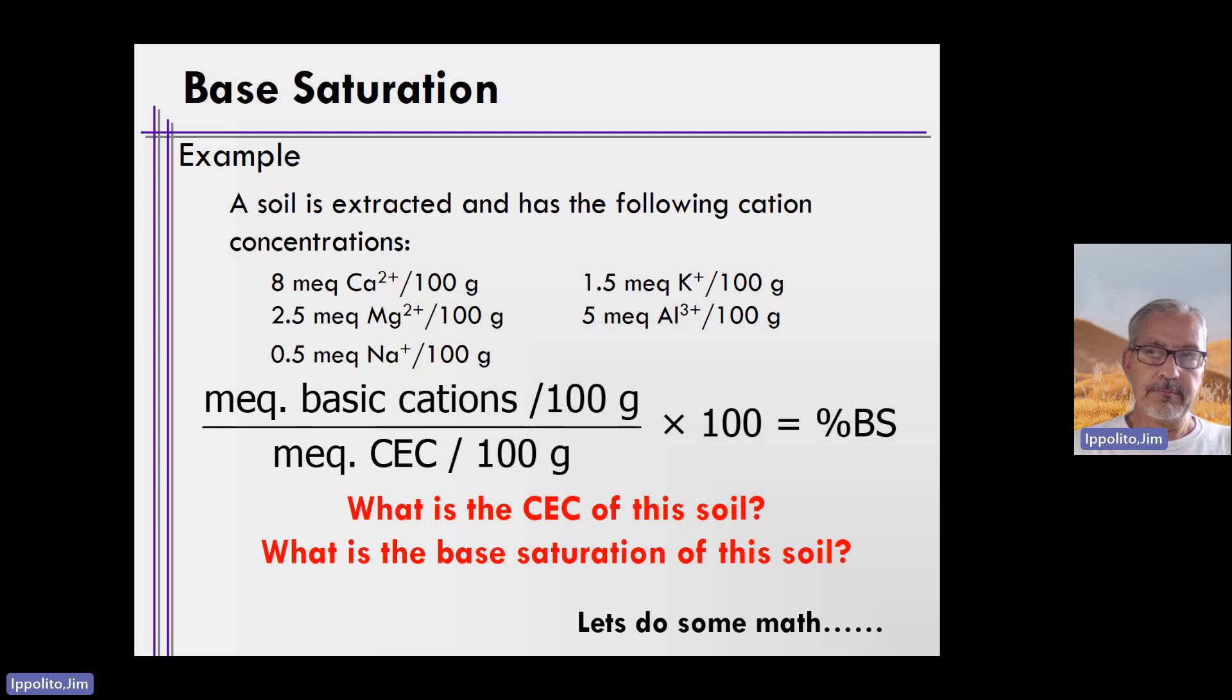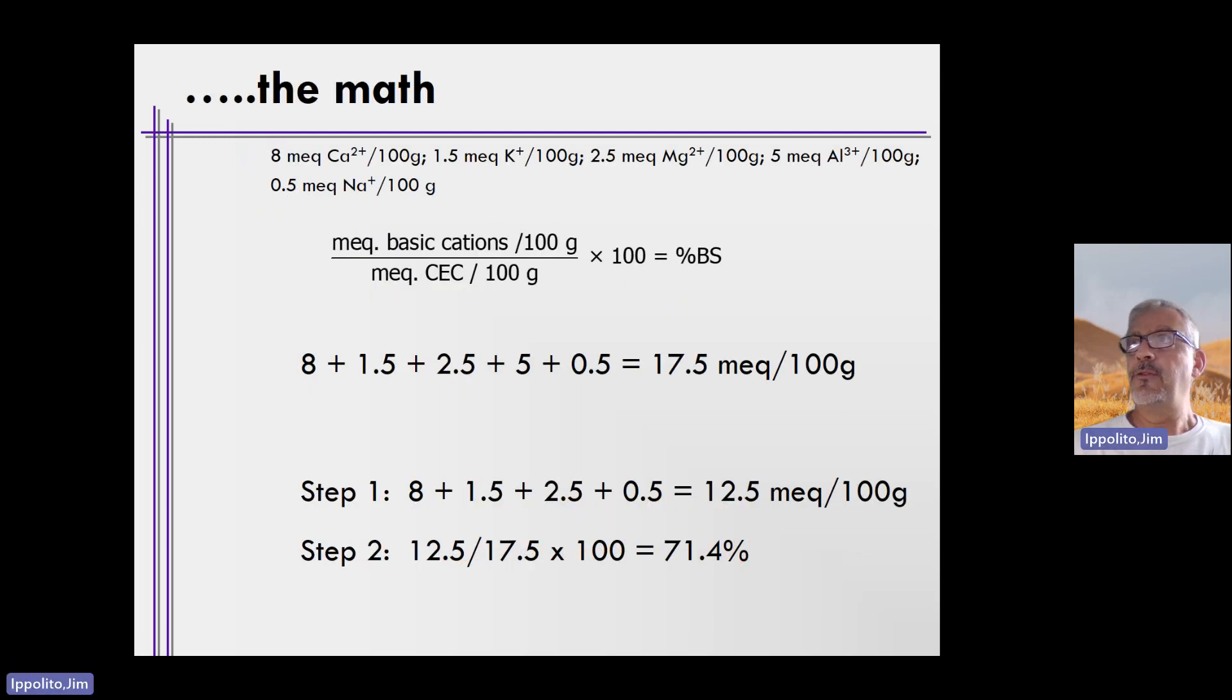Here are the numbers from the previous slide, the concentrations of all five of those elements in milliequivalents per 100 grams. To determine the CEC, all you do is simply add all of these numbers together. And if you do that, the CEC equals 17.5 milliequivalents per 100 grams.